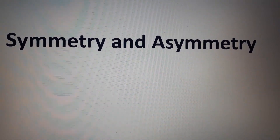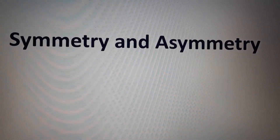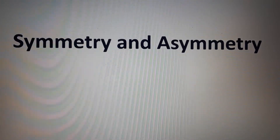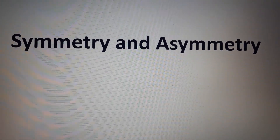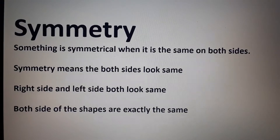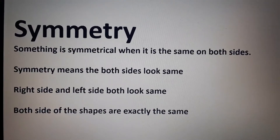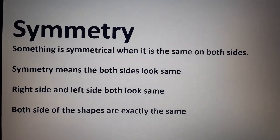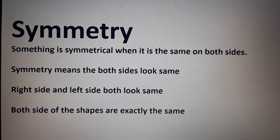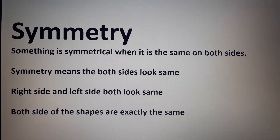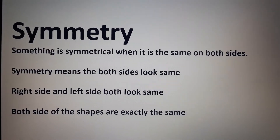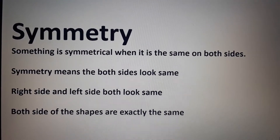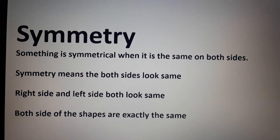Hi kids! In this video we're going to learn about symmetry. What is symmetry? Something is symmetrical when it is the same on both sides. Symmetry means both sides look the same — the right side and the left side both look the same.